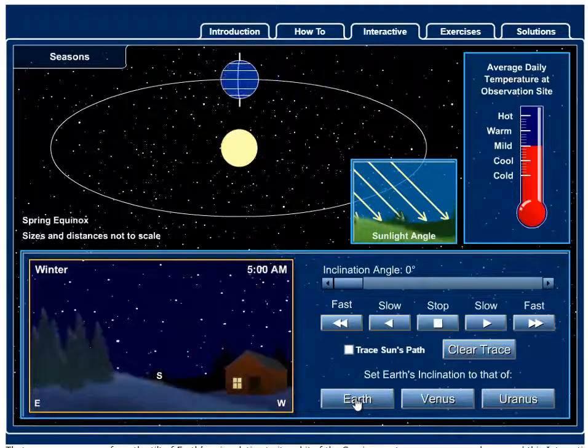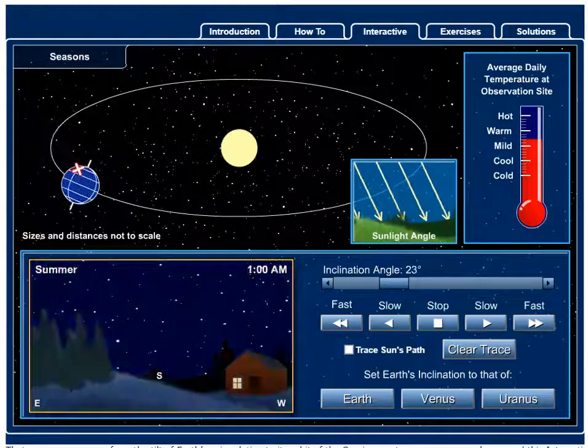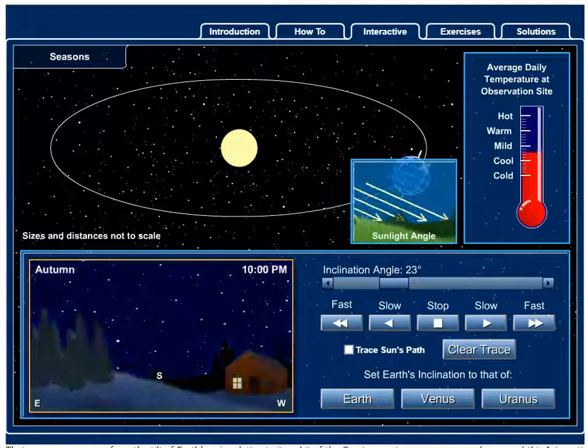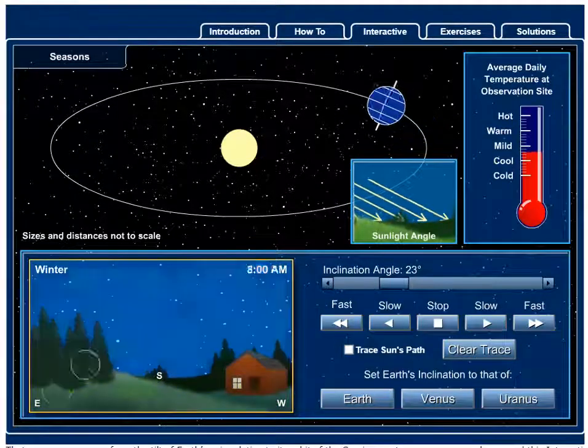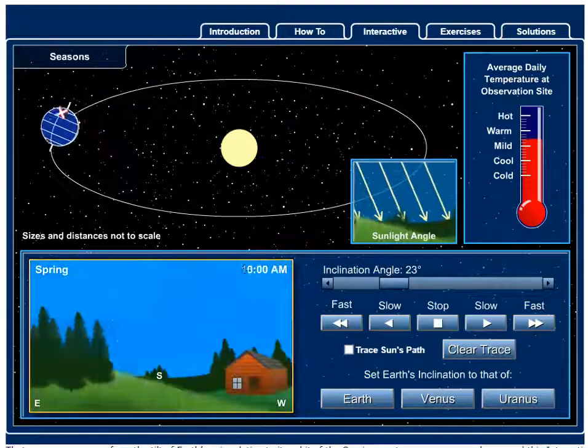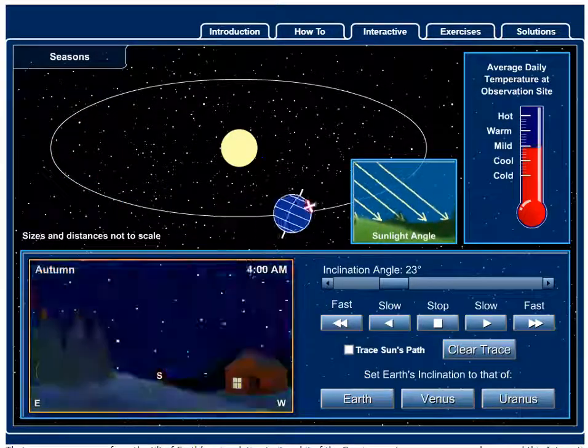I'm now going to change it to be Earth and put a tilt on it. So take a look at what's happening here. First look down by the house. Look at how low the Sun appears to rise in the fall and winter and how high it gets in the sky in the spring and summer.